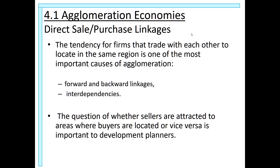The second source of agglomeration economies — one of the most important — is direct sale-purchase linkages. The tendency for firms that trade with each other to locate in the same region is one of the most important causes of agglomeration. Each firm has forward and backward linkages: forward linkages refer to the firm's clients, and backward linkages refer to the firm's suppliers. The firm tends to locate close to both buyers and suppliers, creating interdependencies in these economic relationships. Whether forward or backward linkages matter more depends on the industry, but both are usually very important.